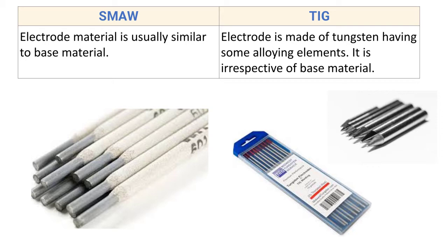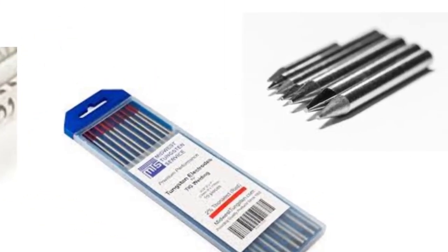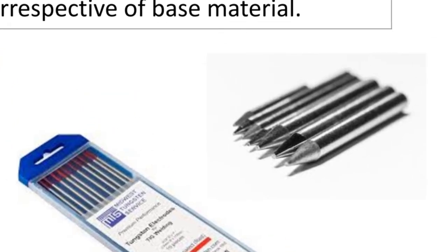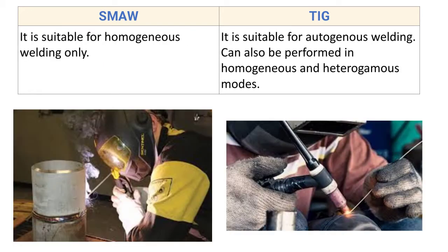For TIG, the electrode is made up of tungsten with some alloying element, irrespective of the base metal. Here you can see the electrodes used in the tungsten inert gas welding process. The tungsten electrode is sometimes coated with zirconium or thorium in order to increase its emissivity.